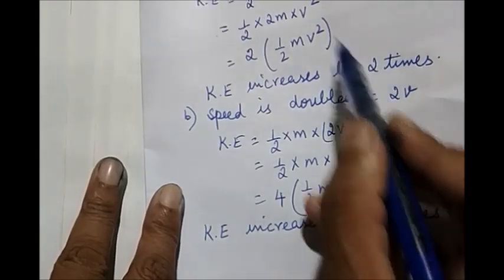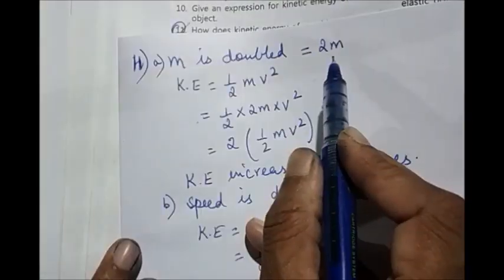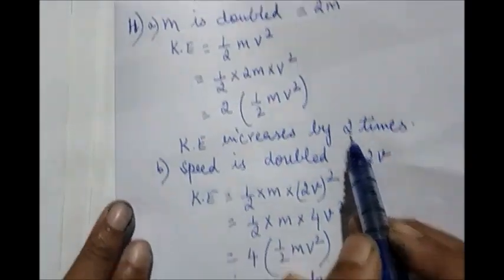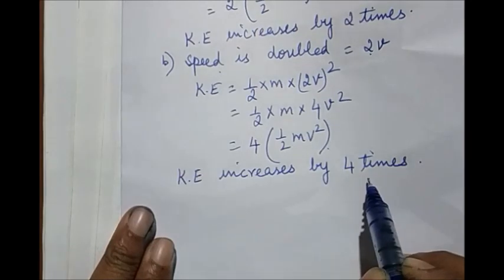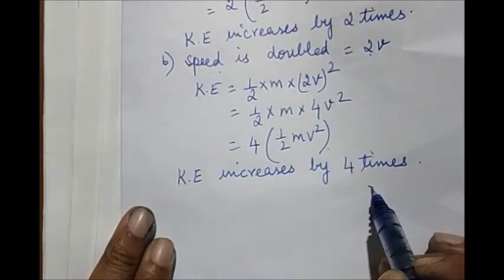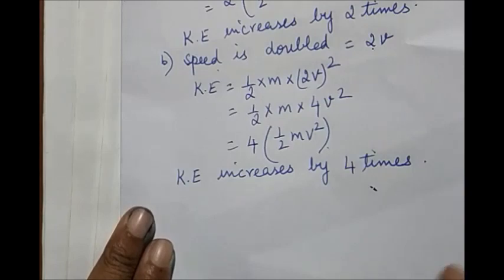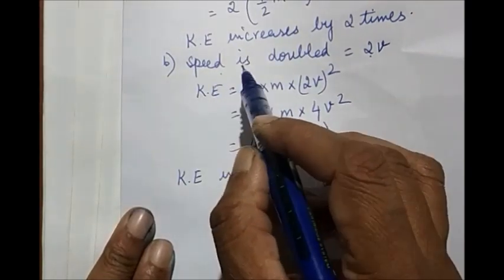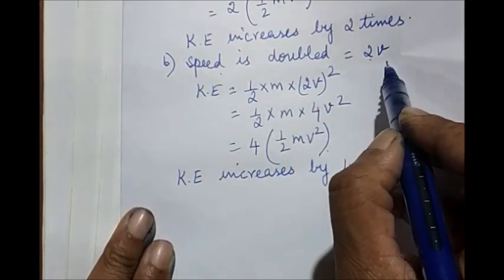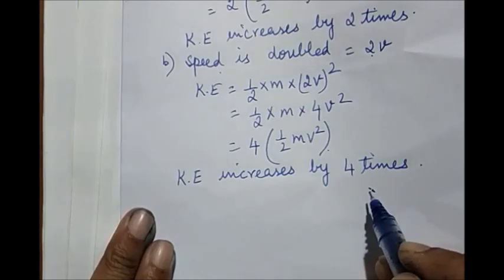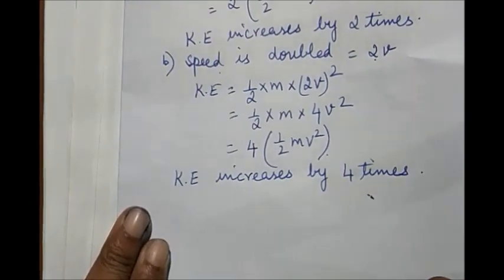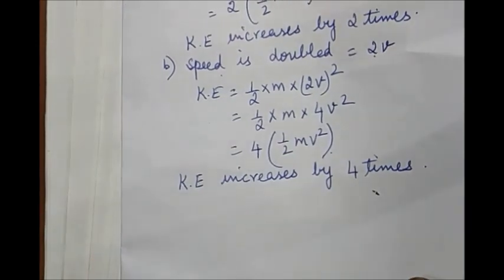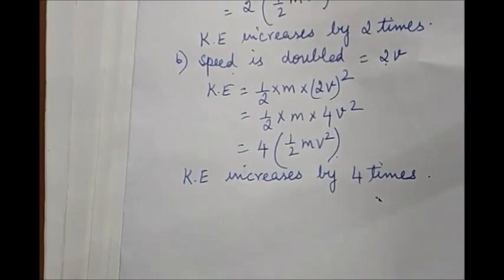If mass is increased by two times, kinetic energy also by two times. But if it is speed, if speed is increased by two times, kinetic energy will increase by square of that number, that is 4 times. Suppose if in the question it's given speed increases by three times, then kinetic energy would have increased by three square, that is 9 times. You can note down in your notebook.